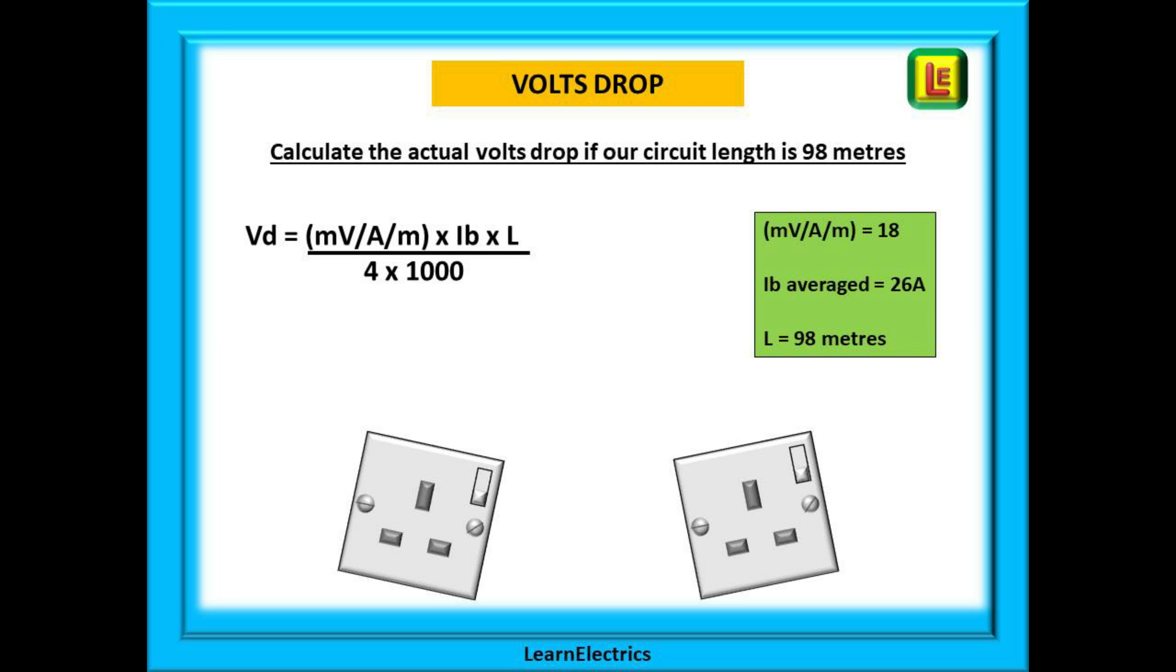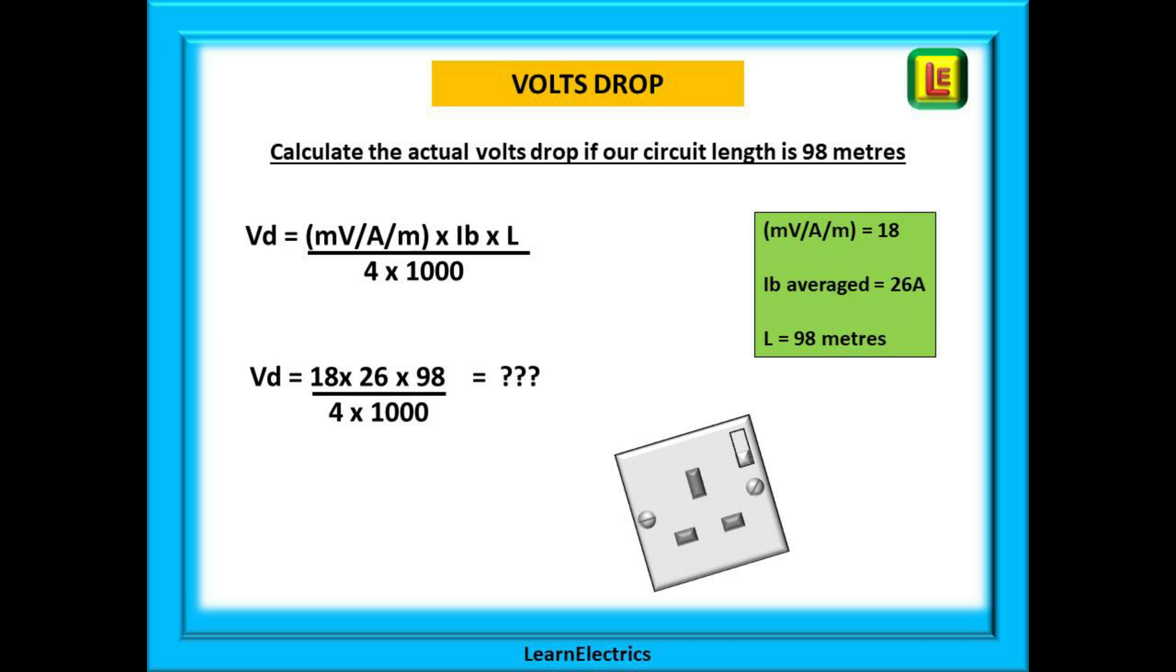The data to enter is shown in the green box. We have put the numbers into the formula. Now we just need a calculator and out pops our answer, 11.47 volts. A 98 meter ring circuit in 2.5 millimeter twin and earth with an average load current of 26 amps will have a voltage drop that is just inside the permissible maximum.